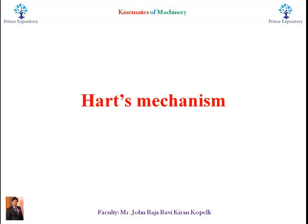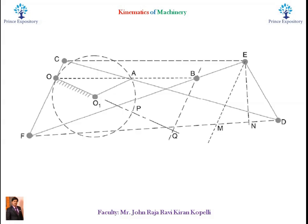Let us learn another exact straight line mechanism, that is Hart's mechanism. Hart's mechanism requires only 6 links as compared to the 8 links required by the Pisselier mechanism.